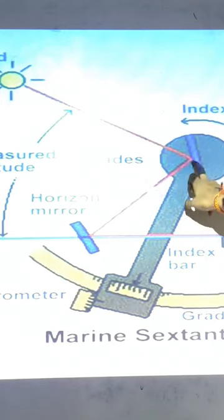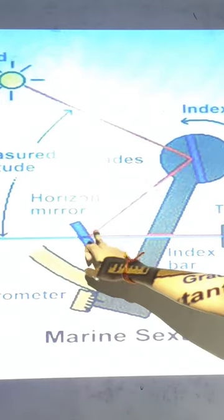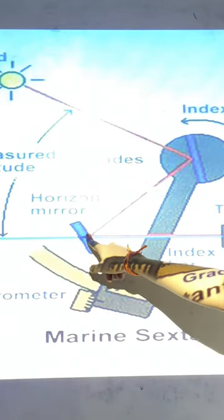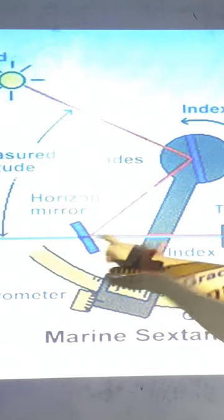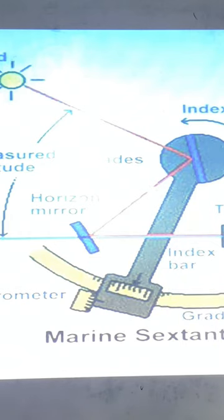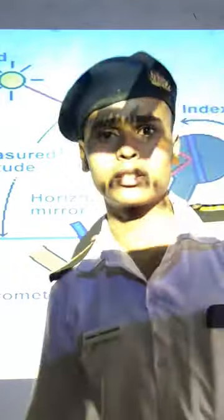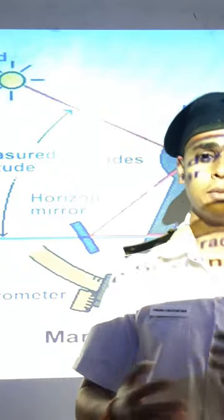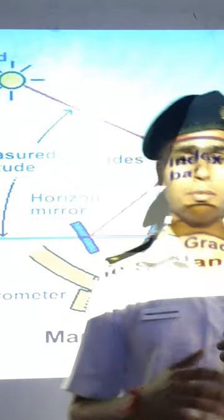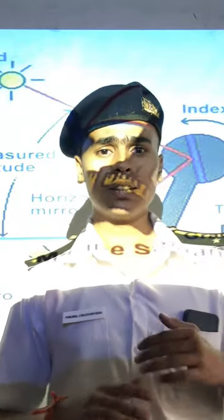As the sunlight is coming from here and it is then reflecting on our horizon mirror, then it is coming to the telescope. So like that it is a normal sextant and we are going to look at its components one by one.